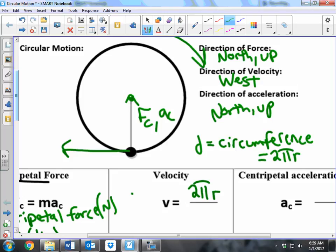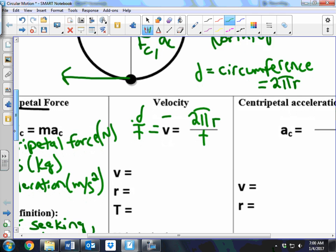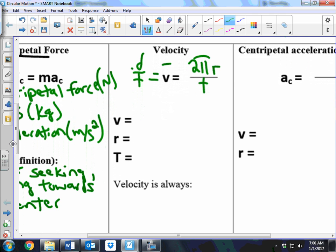So the equation for velocity, or average velocity, is distance over time. Well, our new distance is really 2π times the radius, or distance times π divided by the time. Now remember, the time is the time that it takes to go around one complete circle.